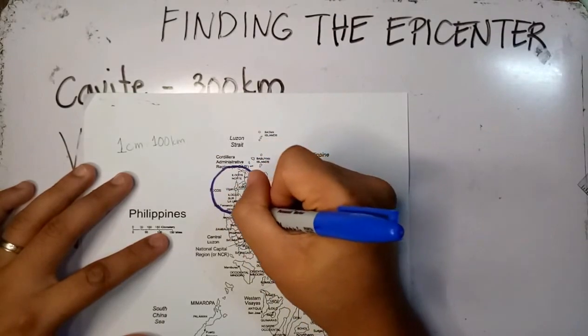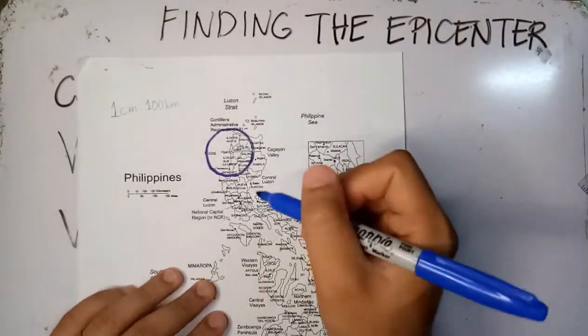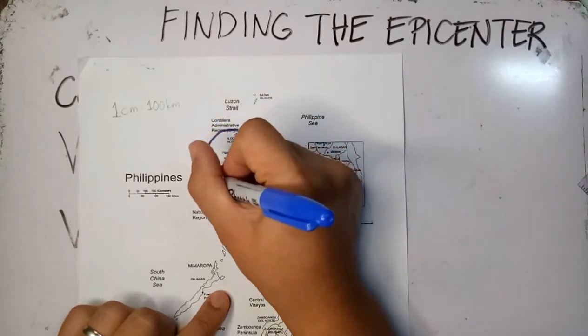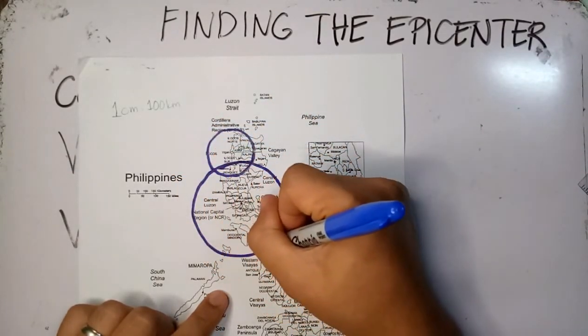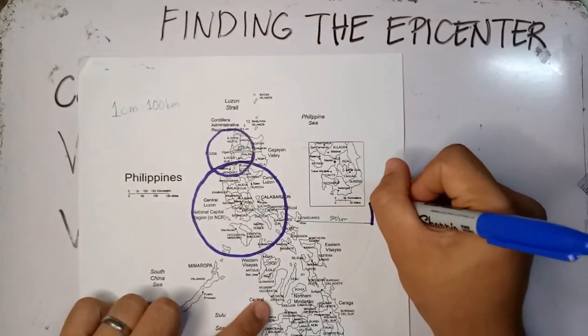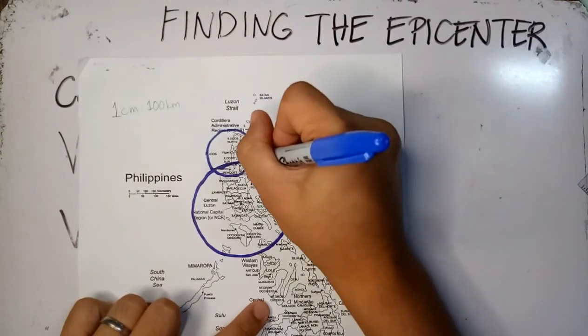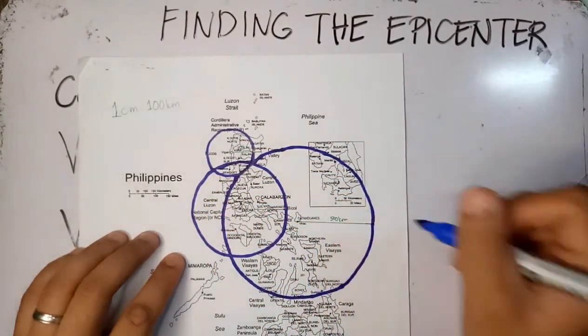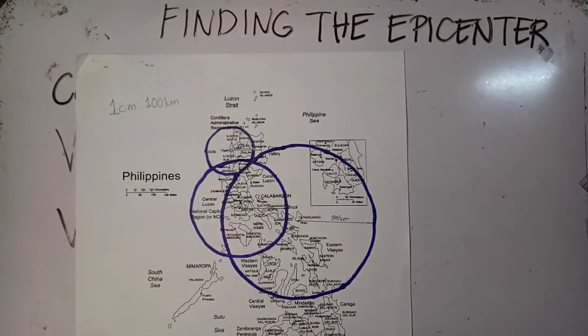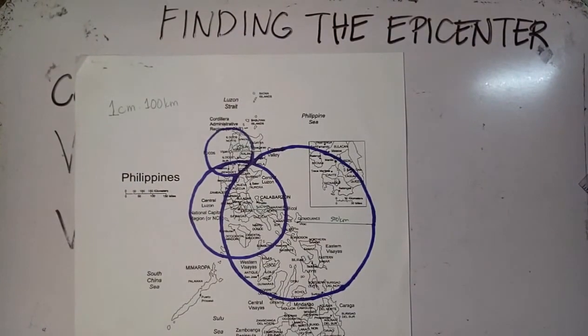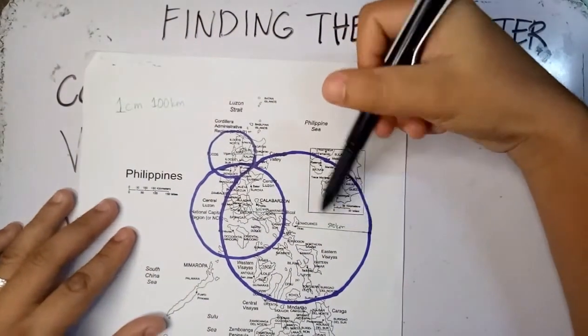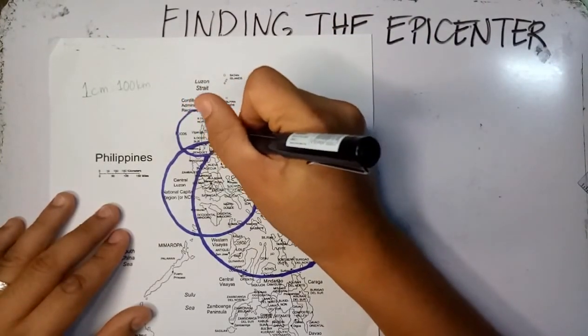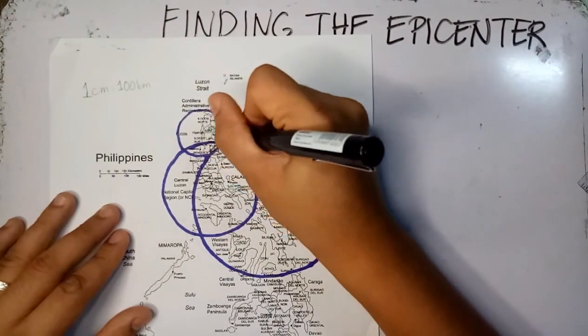Let's use a marker for us to be able to see. For Vigan we have 150, Cavite 300, and Catanduanes 500. As you can see, where do the three circles intersect? Based on this, Catanduanes, Vigan, and Cavite intersect here, part of Isabela. Our epicenter is here.